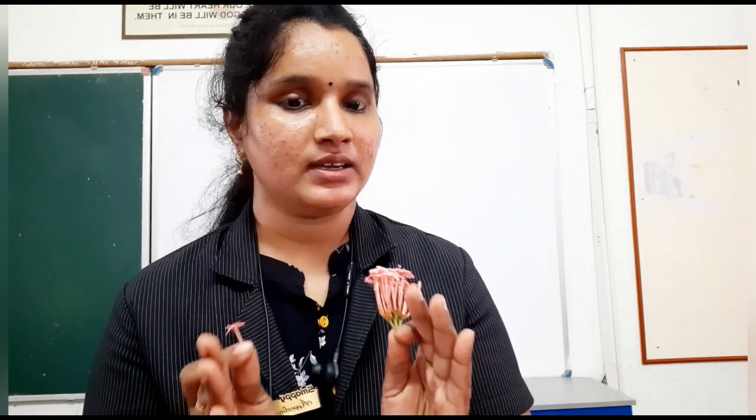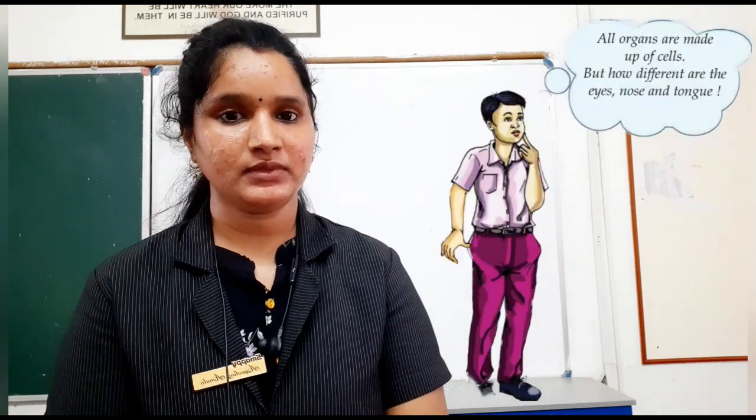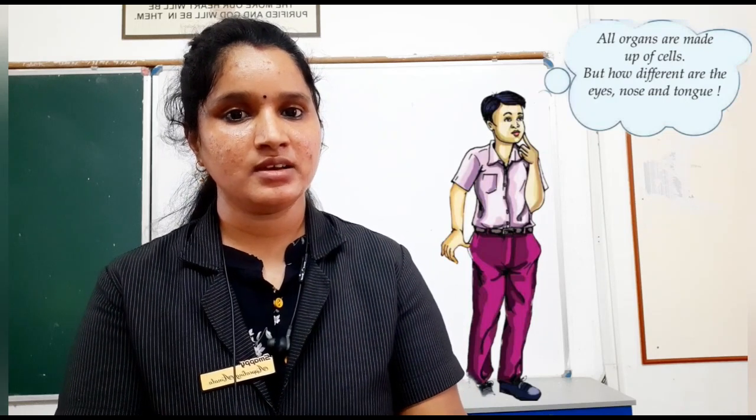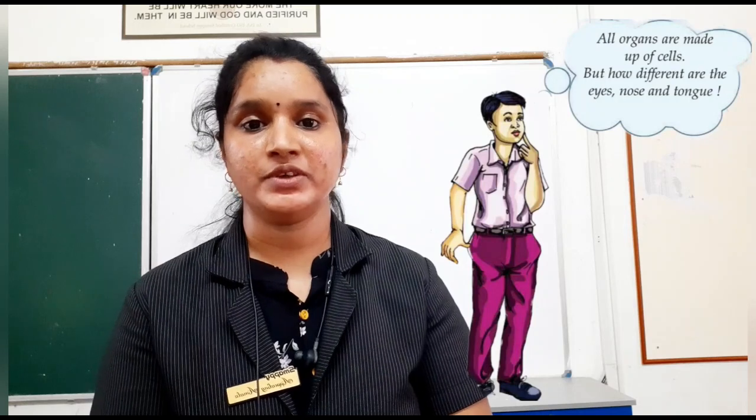This is what a cell is also in our body. If this is a cell, these are a cluster of cells. So, we have a term for this cluster of cells. Before going to that, let us know how these different cells are functioning in our body and what are the different kinds of cells in our body. Look at this picture. There is a boy who had a doubt that all organs are made up of cells, because even then each organ is different.